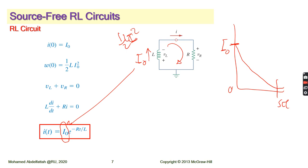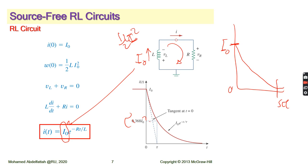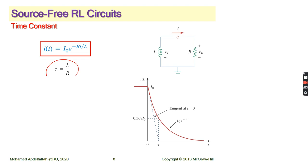The key differences from the RC circuit are: the initial condition in the inductor is an initial current (not voltage), and the time constant is different. For a capacitor, tau = R × C, but for an inductor, tau = L/R. At time tau, the current decays to 36.8% of its initial value.